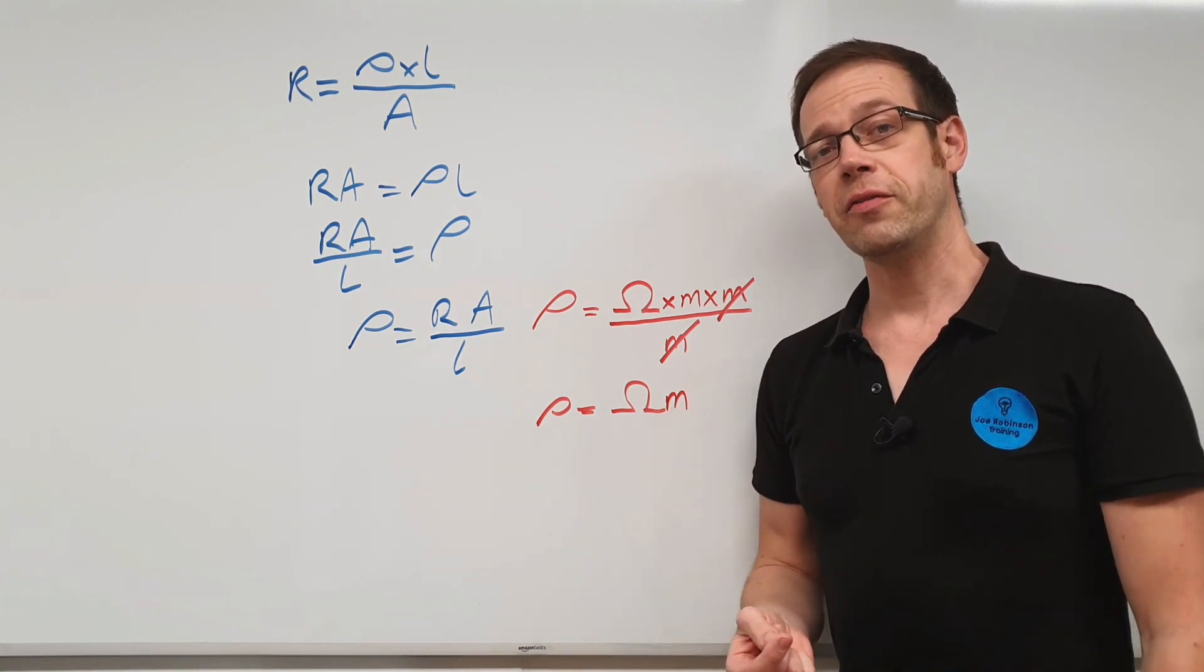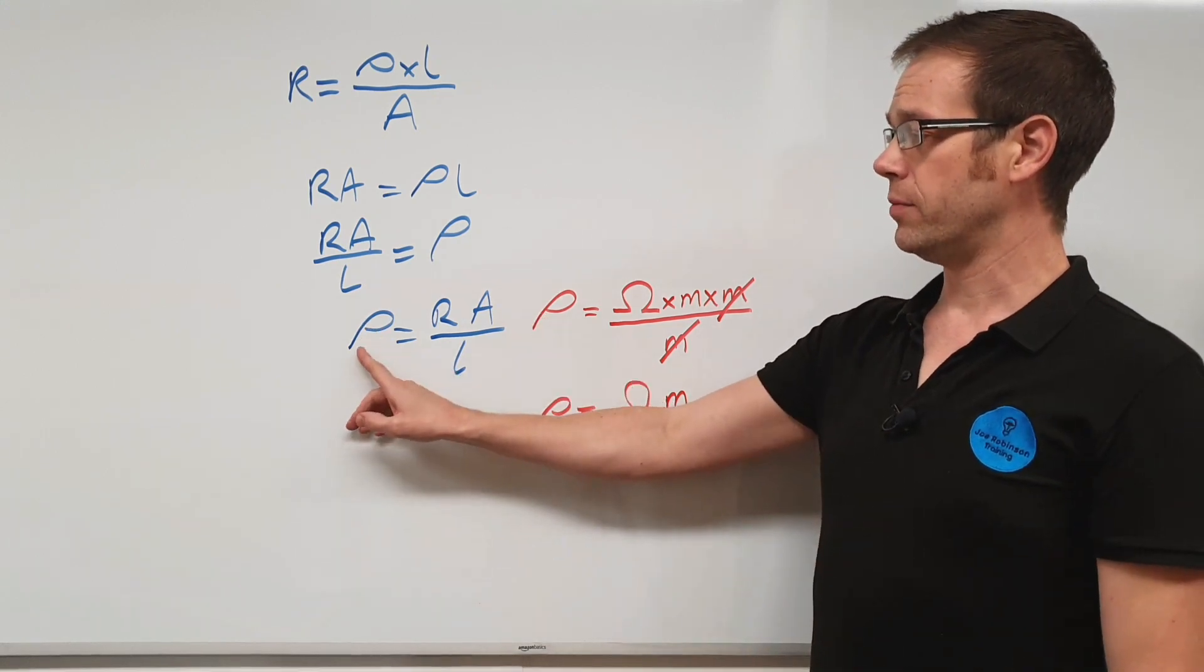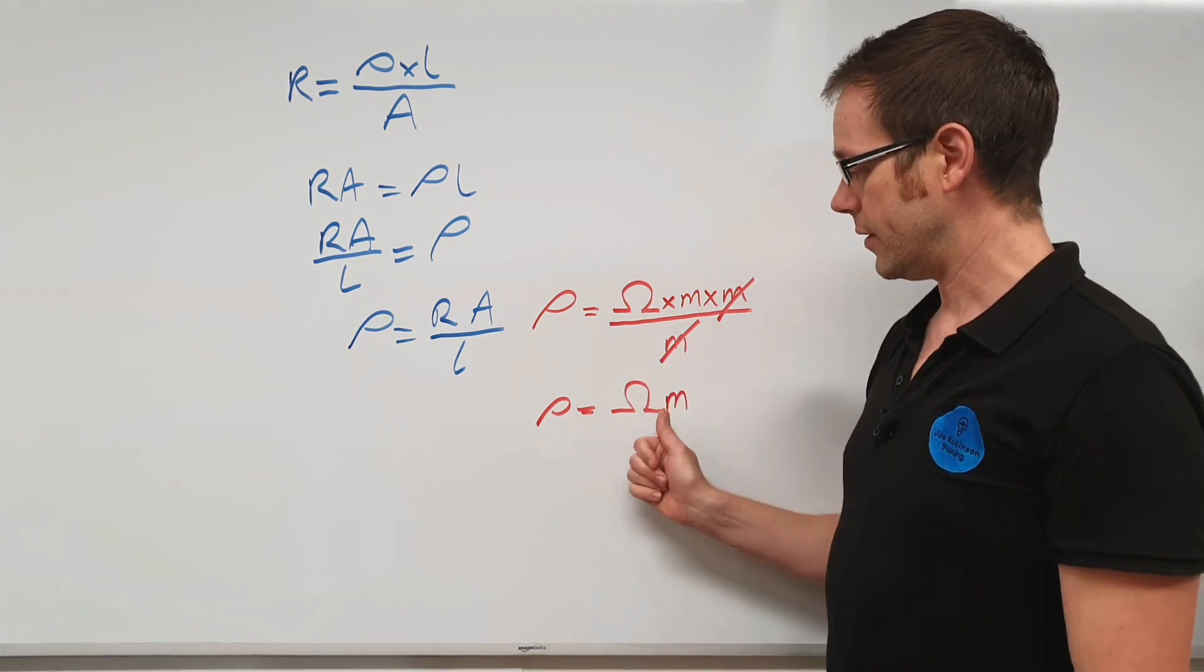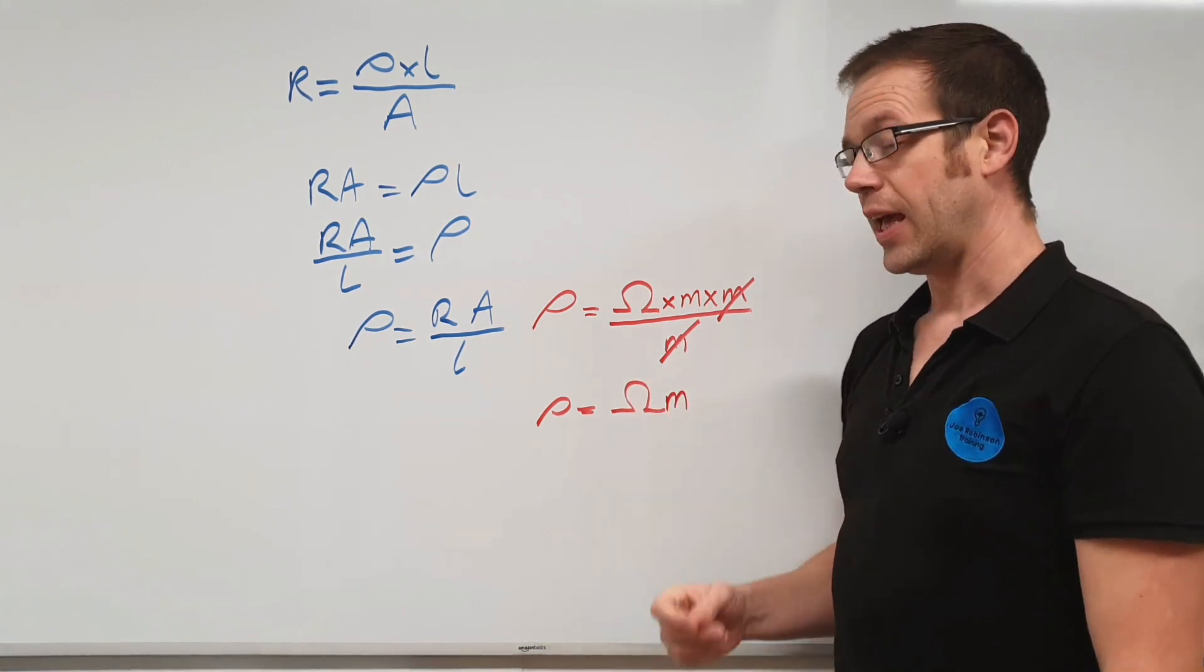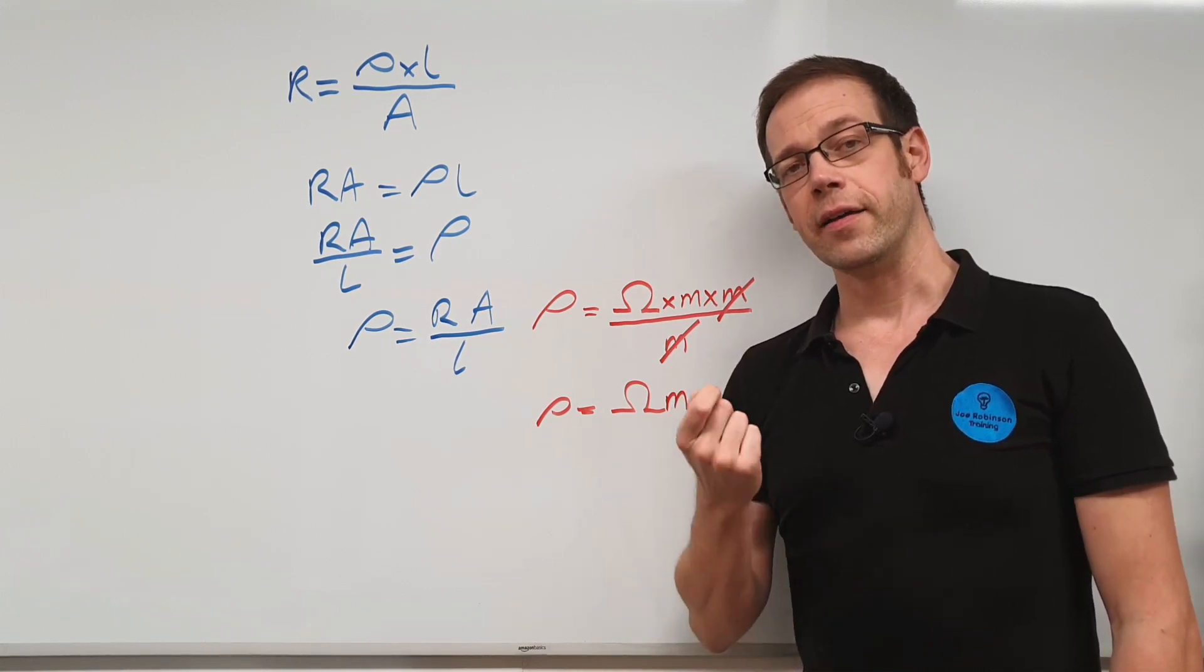So key things to take away from this particular video. The mathematical symbol for resistivity is rho. The unit is the ohm meter, and the unit symbol is omega m. And remember, resistivity is that specific resistance of a given material.